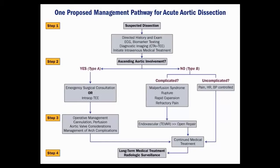Let's walk through the management pathway for acute dissection. Take the history — do they have high-risk features and symptoms? Get an ECG, check a D-dimer but don't let it completely sway your decision. Decide on imaging: CT, TEE, or MRI depending on availability and patient stability. Start medical therapy immediately — beta blockers are first-line agents. Nitroprusside or other agents to get the blood pressure down. Avoid vasodilators that increase shear stress.